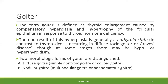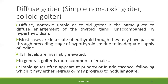Though at some stages there may be hypo- or hyperthyroidism, two morphologic forms of goiter are distinguished. The first is diffuse goiter, also known as simple non-toxic goiter or colloid goiter. The second type is nodular goiter, also called multinodular goiter or adenomatous goiter.